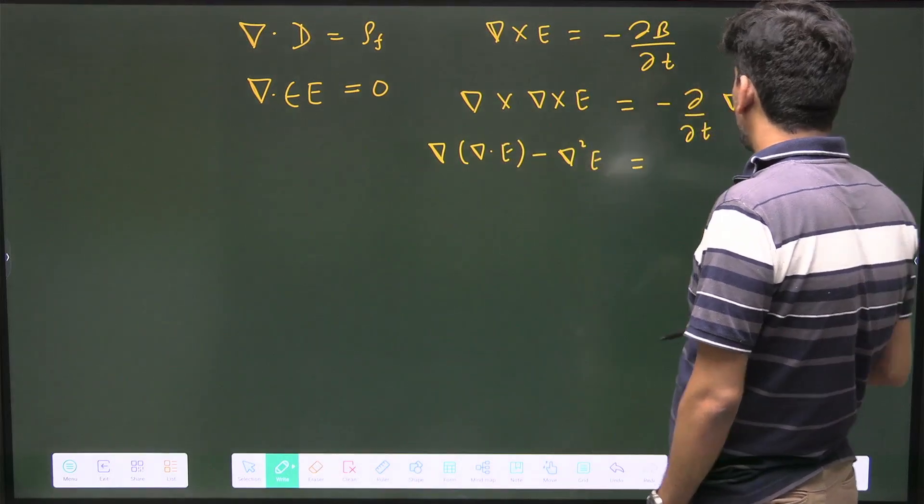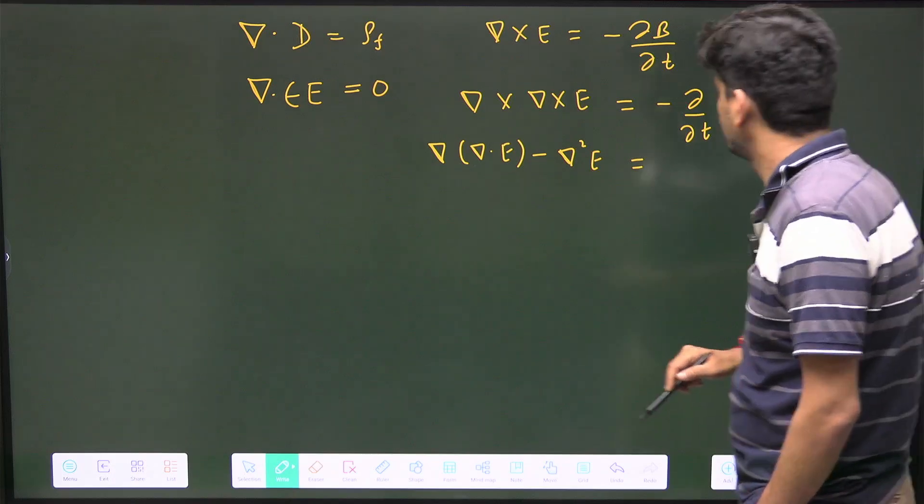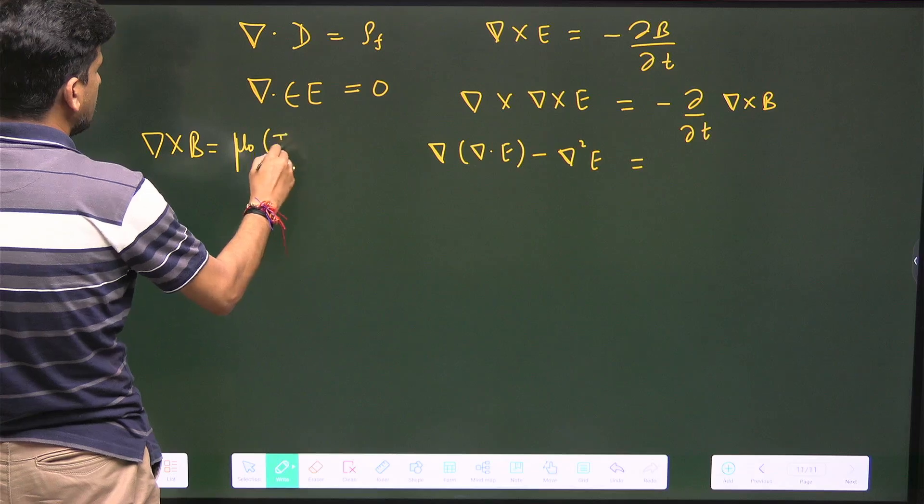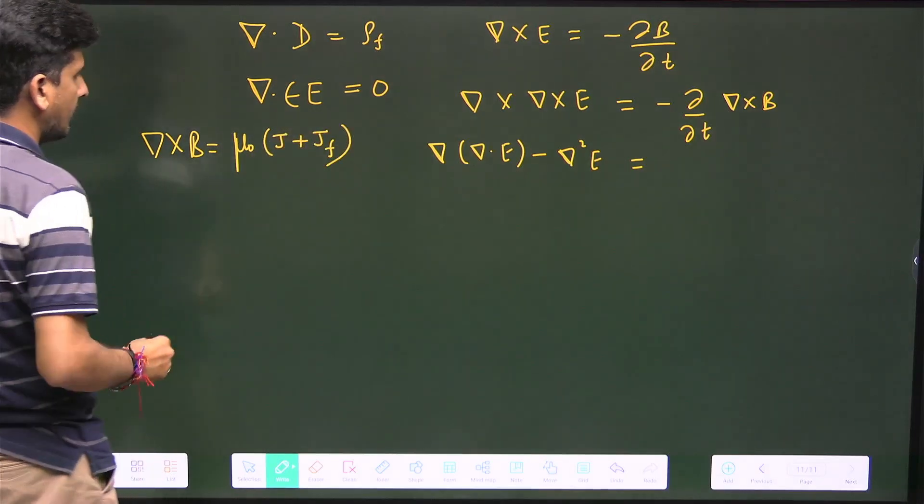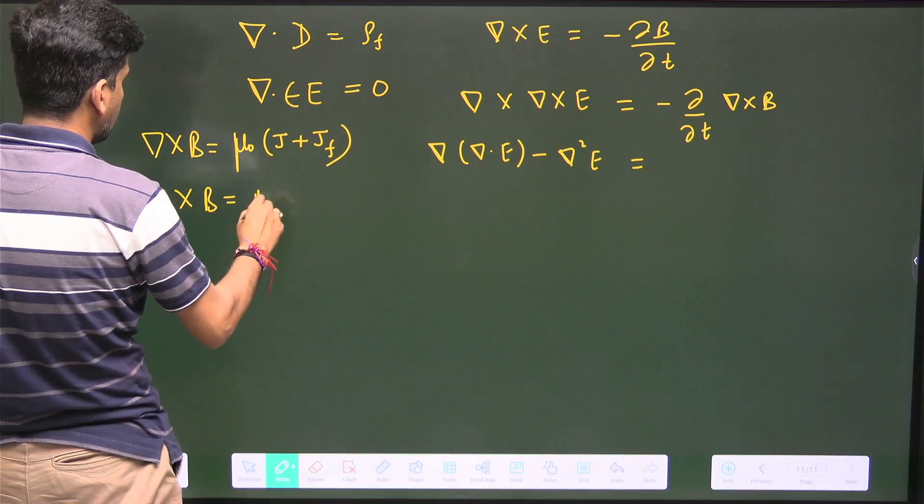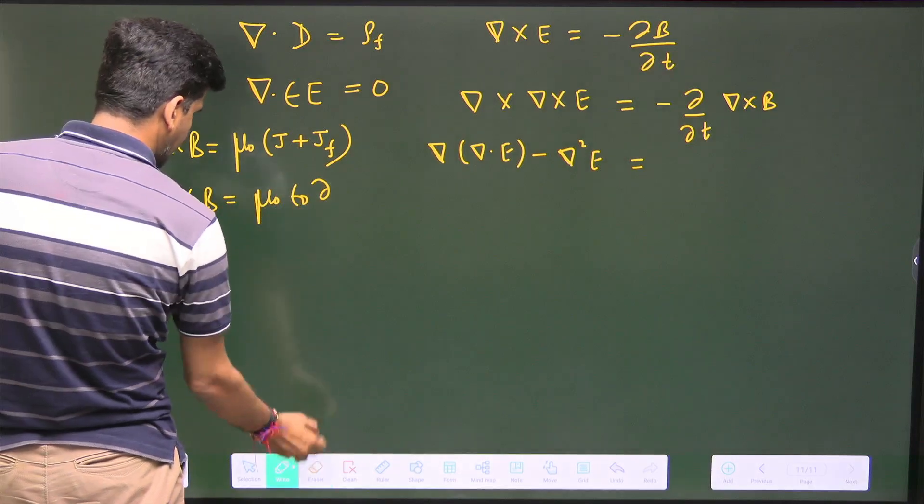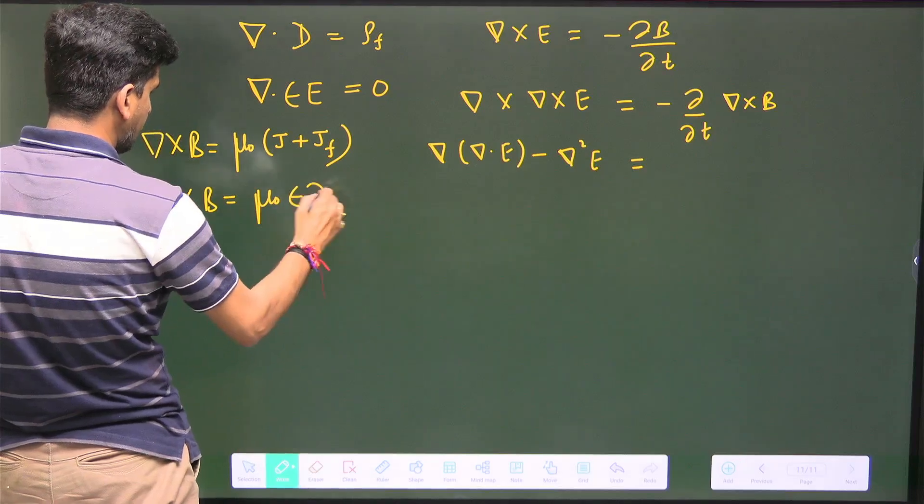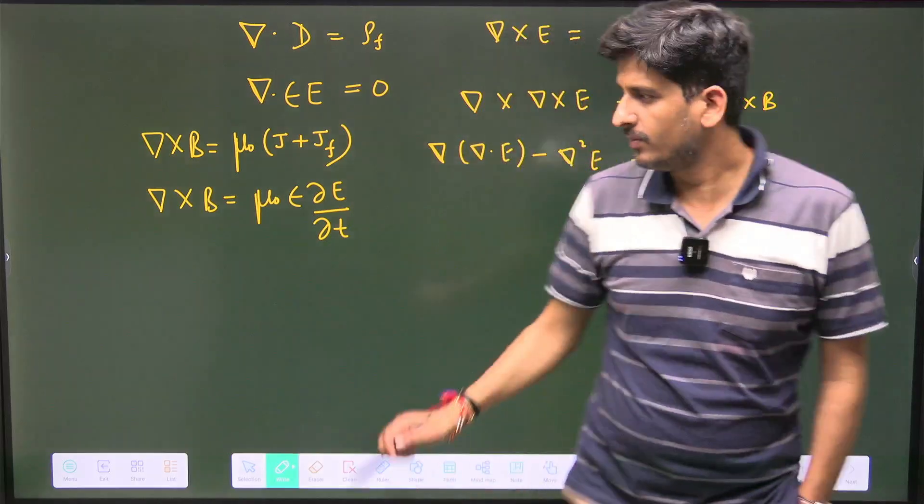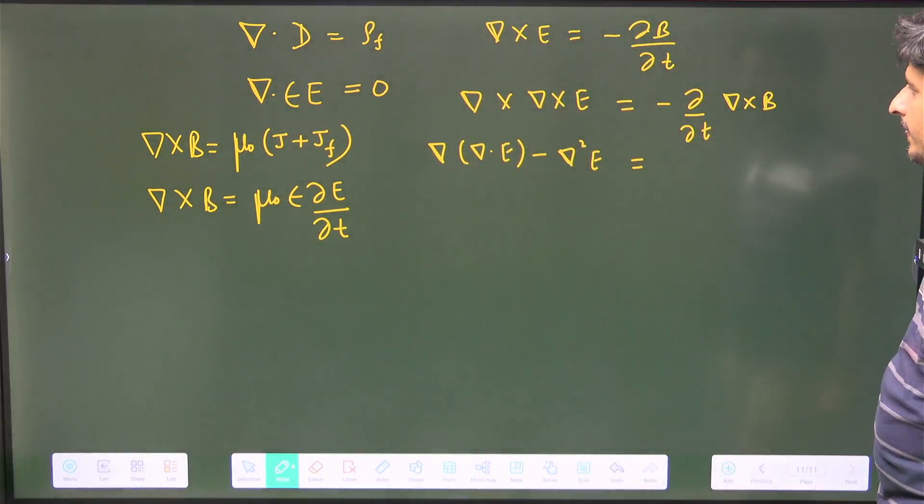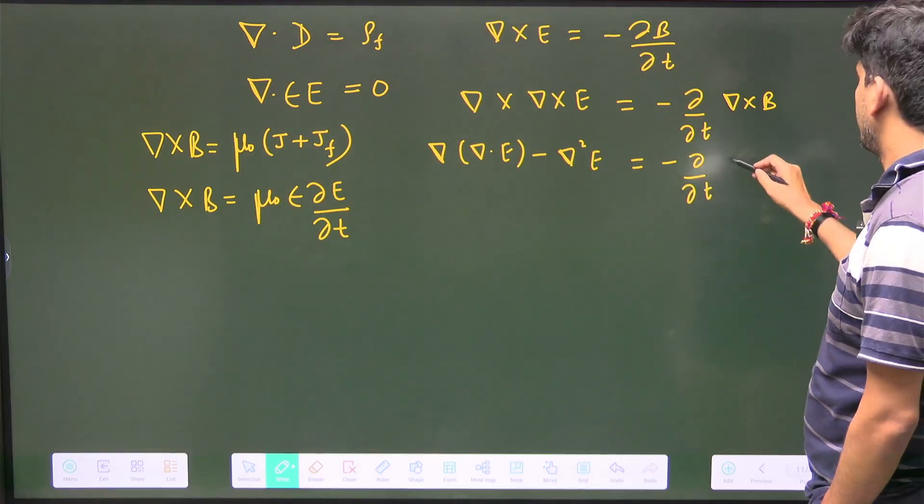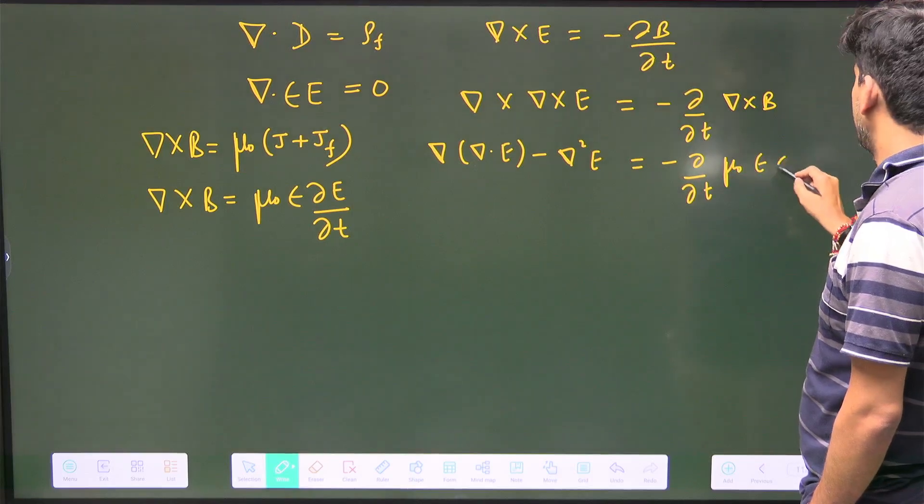Now this will become del(del·E) minus del square E. On this side I have to use del cross B, which is equal to μ₀j. The free one is zero, so del cross B is equal to μ₀ε₀, or μ₀ε because ε is the permittivity.